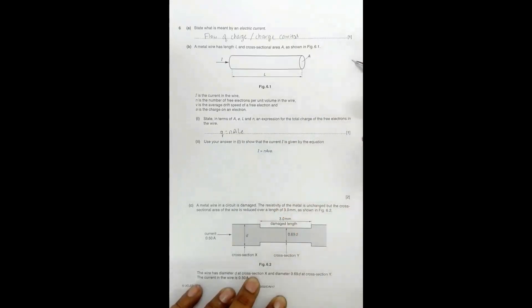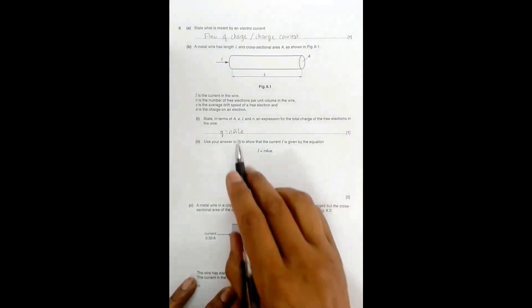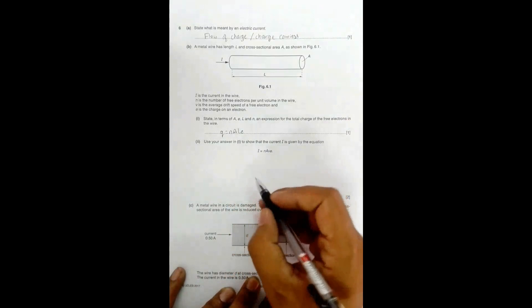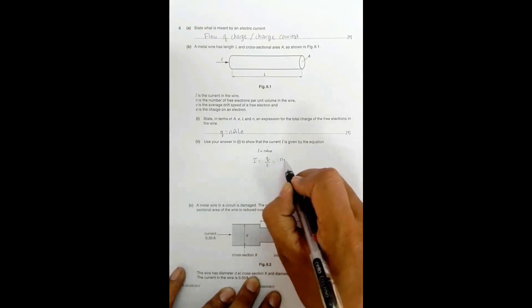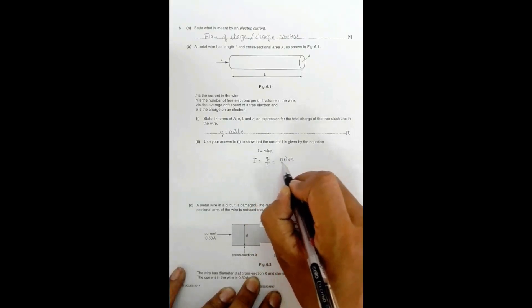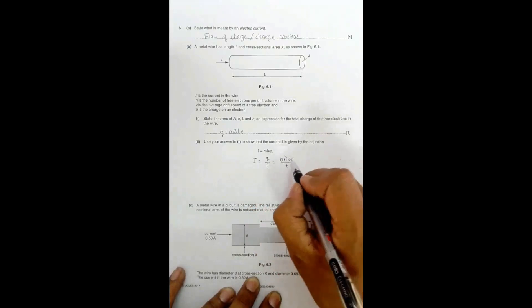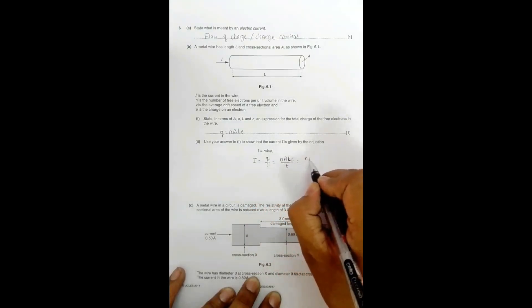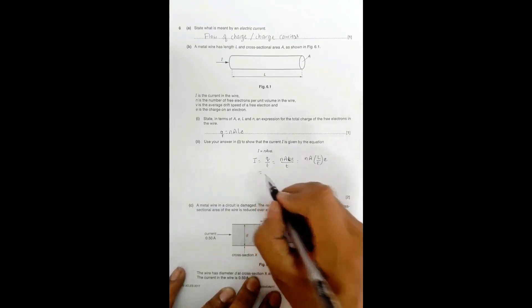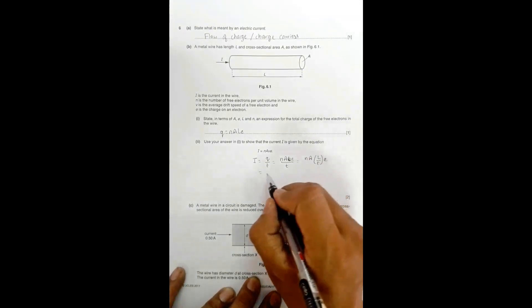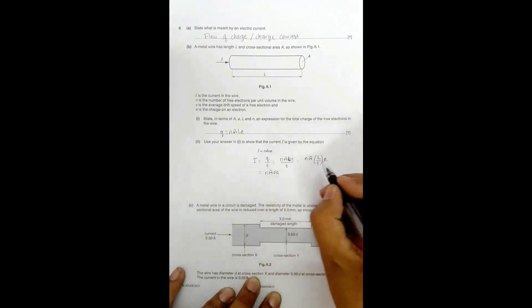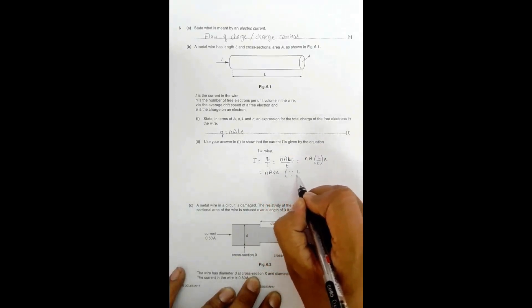Using Q = nALe, we can find the expression for current. Since I = Q/t, we get I = nALe/t. Since the average drift velocity is constant, L/t represents the velocity v of the electrons. Therefore, I = nAve.